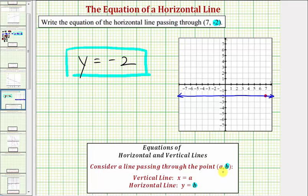Again, because every point on this horizontal line would have a y-coordinate of b. It's also true that the equation of any vertical line passing through the point (a, b) would be x = a, because every point on the vertical line would have an x-coordinate of a.